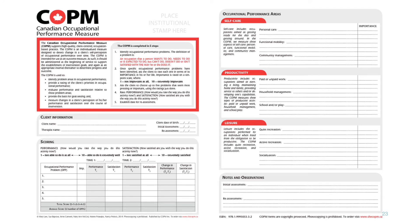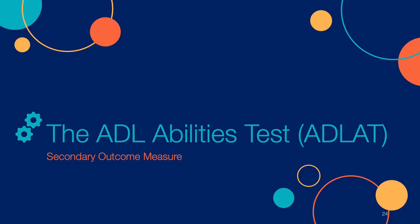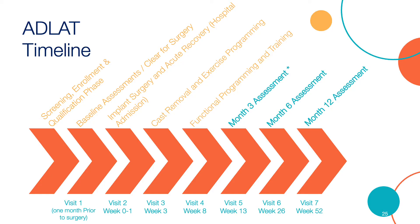Next, we will discuss the ADL Abilities Test as a supplemental quantitative measure of activity performance. The ADL Abilities Test is a scale or approach to activity analysis that further quantifies changes in the performance of activities identified in the COPM. Since it is administered in tandem with the COPM, the timeline is nearly identical, with one exception: the ADL Abilities Test is not administered prior to NNP implantation — it is administered at 3, 6, and 12 months post-implantation to measure differences in activity performance with the NNP on and off.